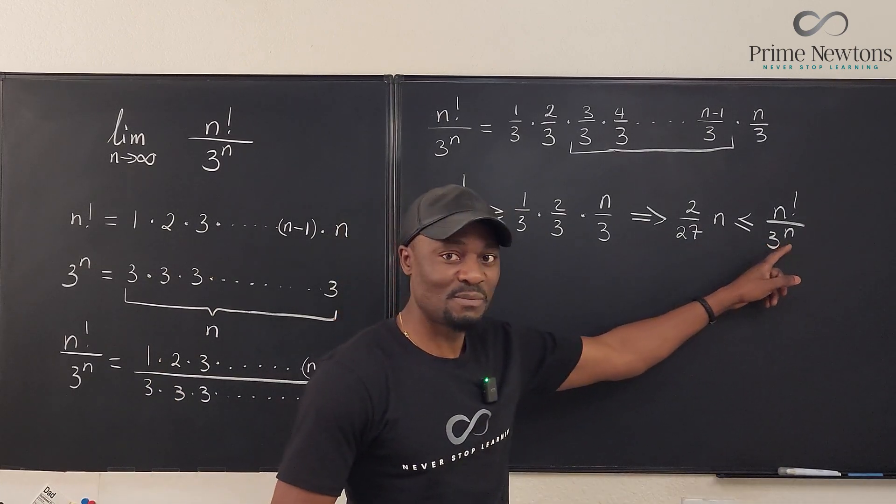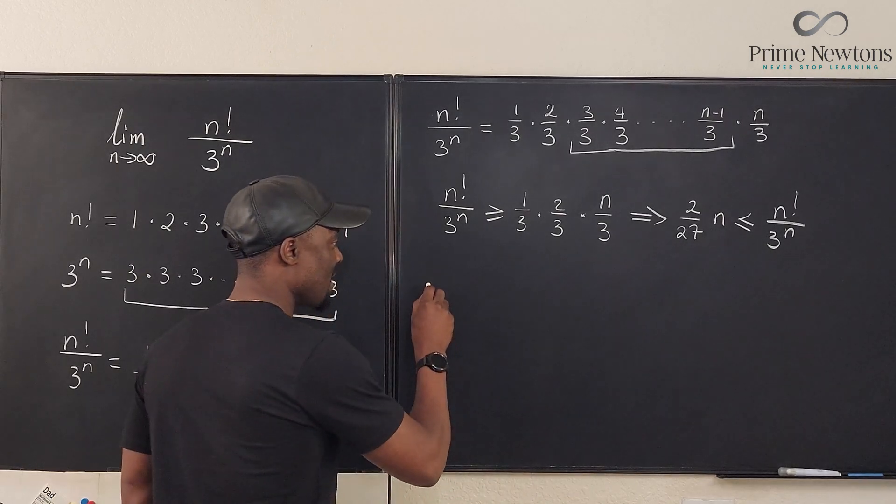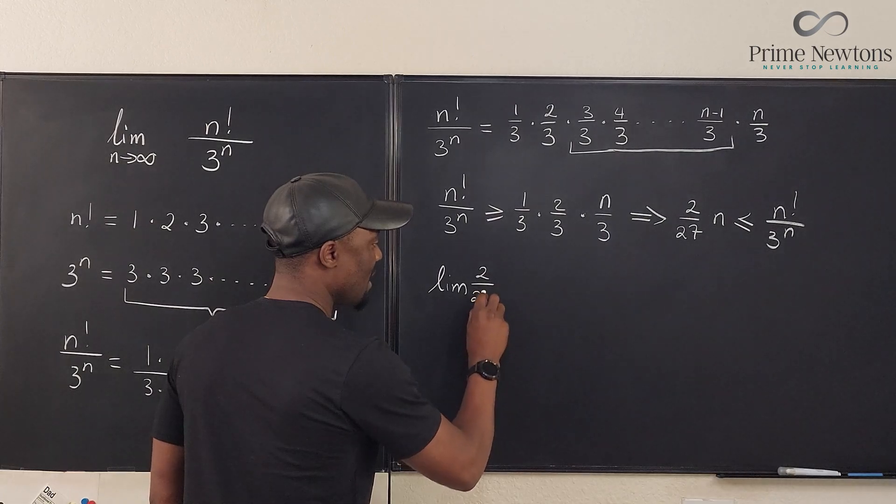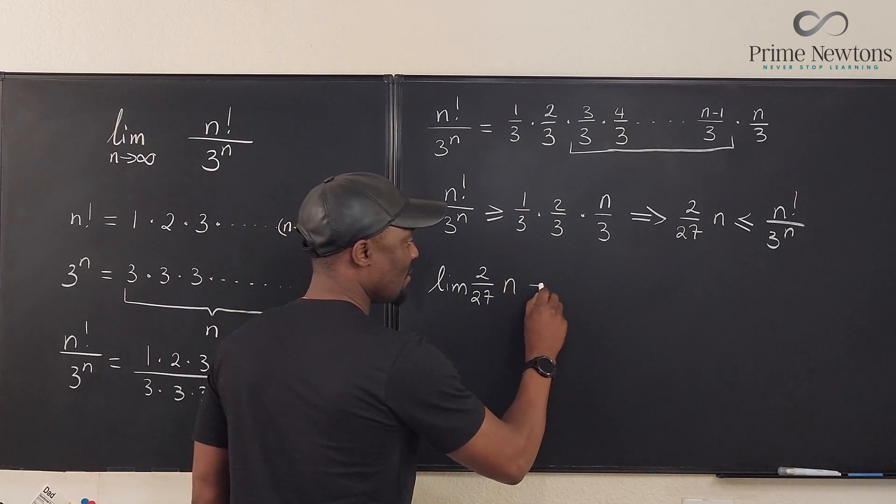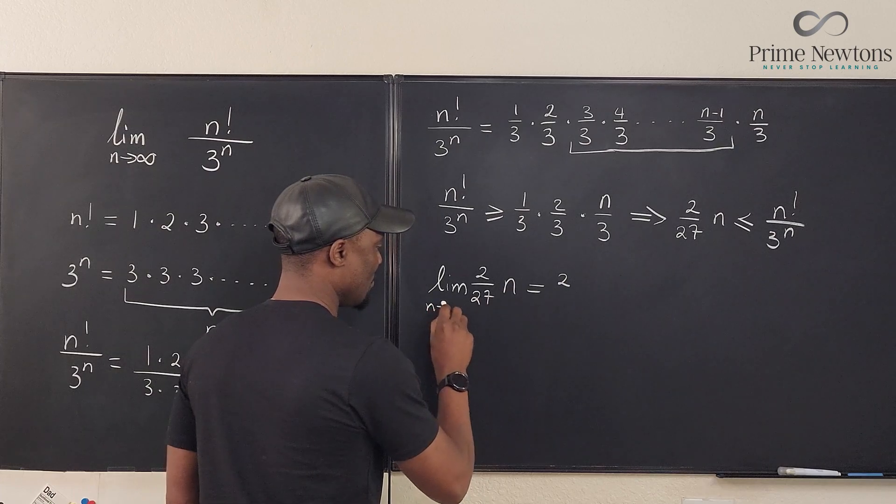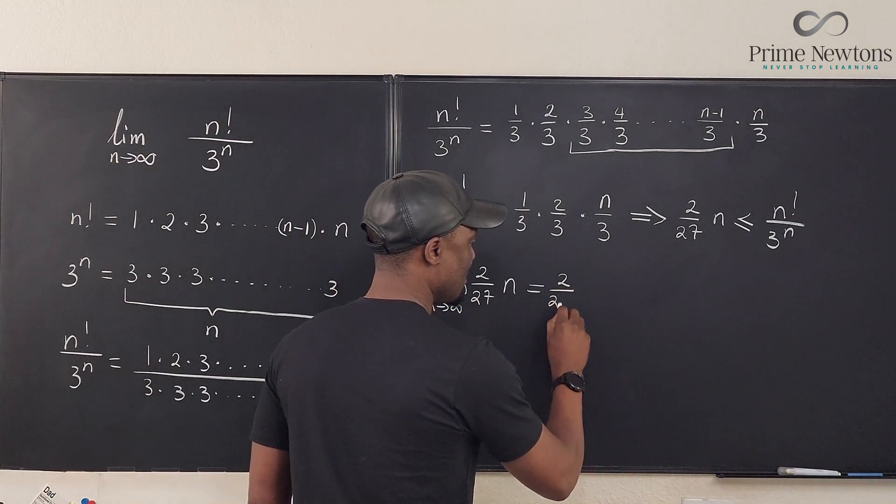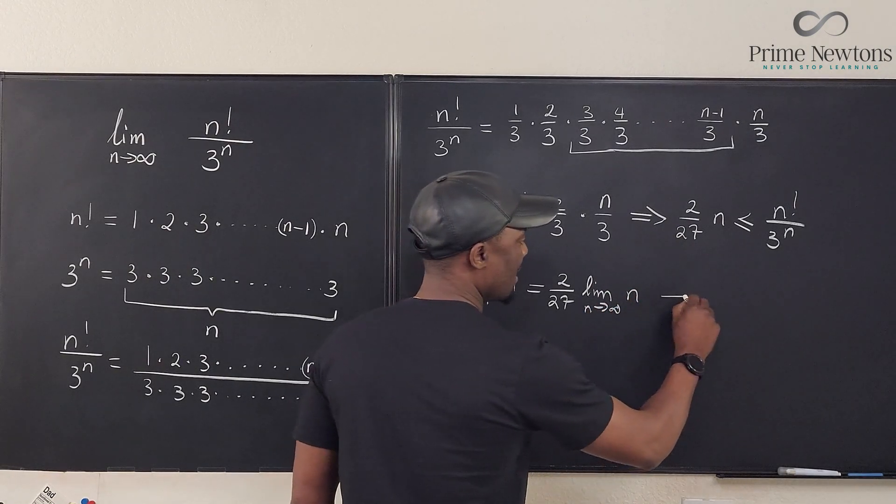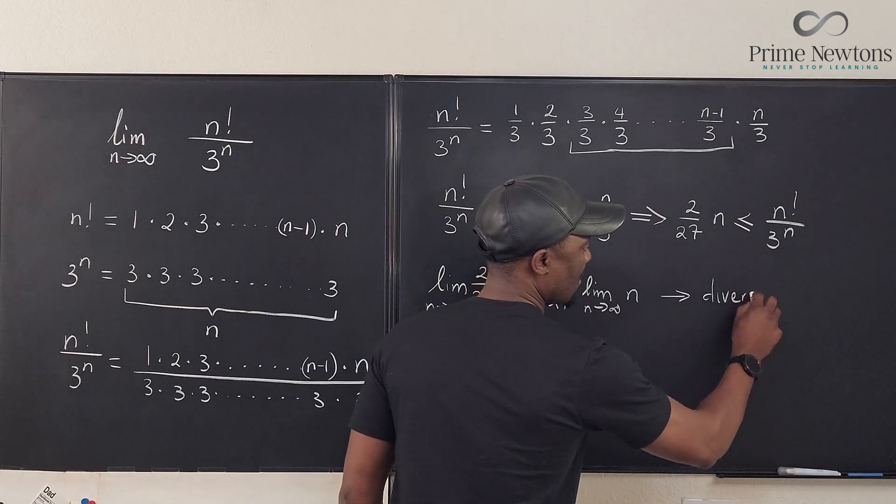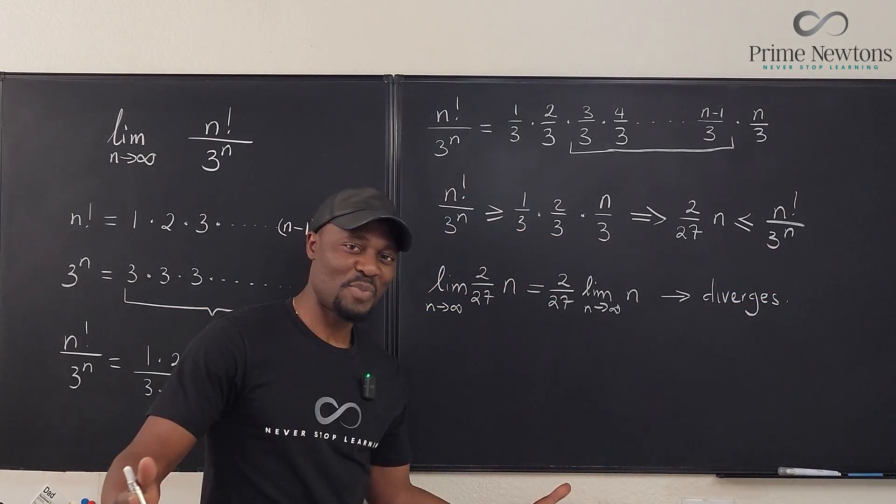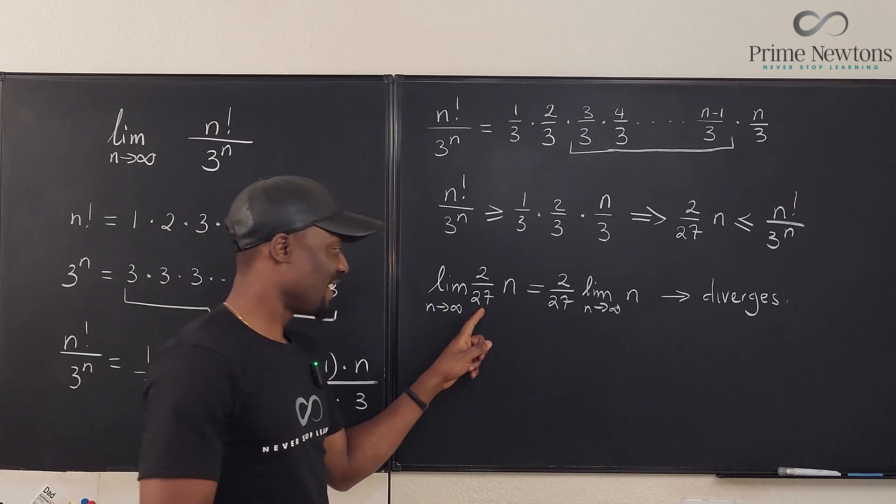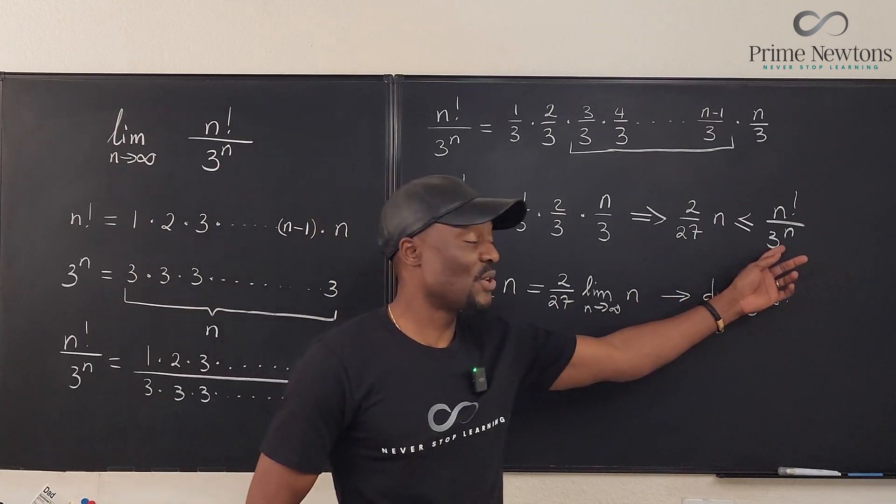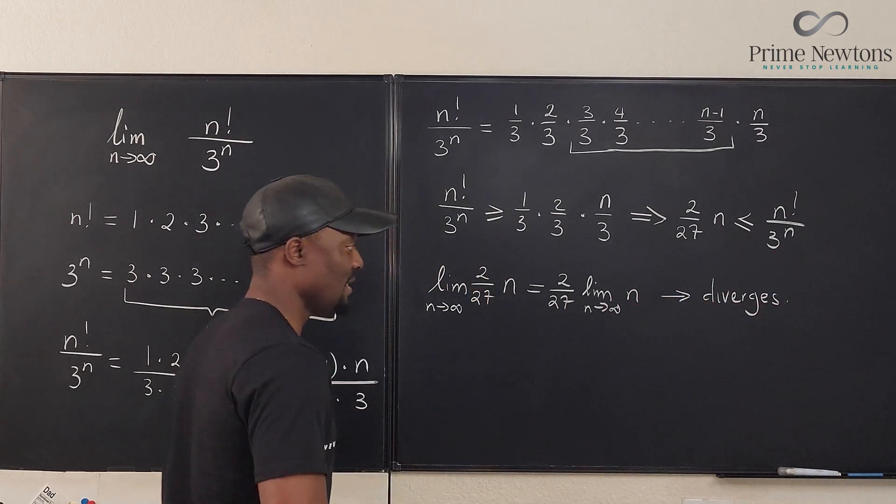So if this diverges, this must diverge. So we can say that the limit of 2 over 27 n as n goes to infinity is equal to 2 over 27 times the limit as n goes to infinity of n. Well, this diverges. So based on what we've done, if this diverges, this diverges and that's it. That's how you know that this goes to infinity. Because this goes to infinity.